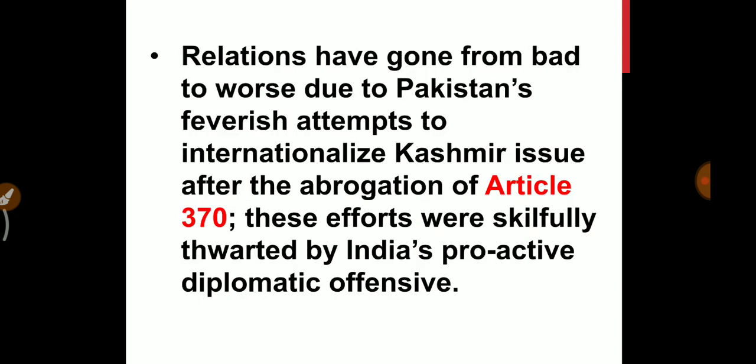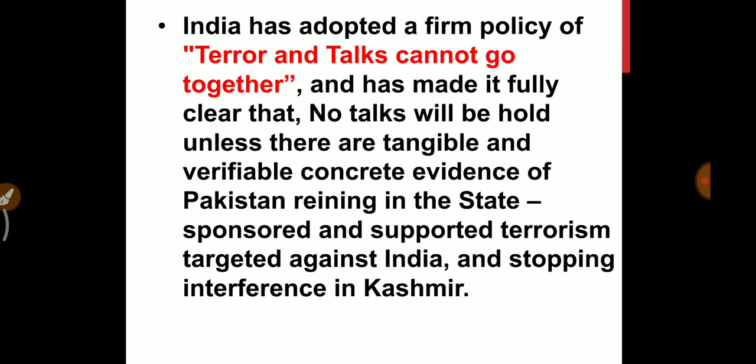Currently, the relationship has gone from bad to worse due to Pakistan's attempts to internationalize the Kashmir issue after the abrogation of Article 370. These efforts were skillfully thwarted by India's proactive diplomatic offensive. India has adopted a firm policy that terror and talks cannot go together, making it fully clear that no talks will be held unless there is tangible and verifiable evidence of Pakistan reigning in state-sponsored terrorism targeting India and stopping interference in Kashmir.